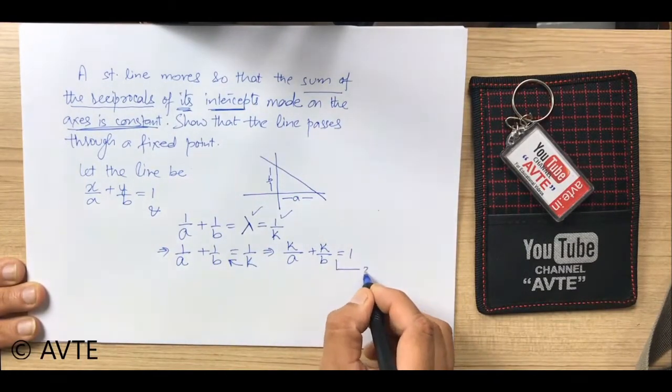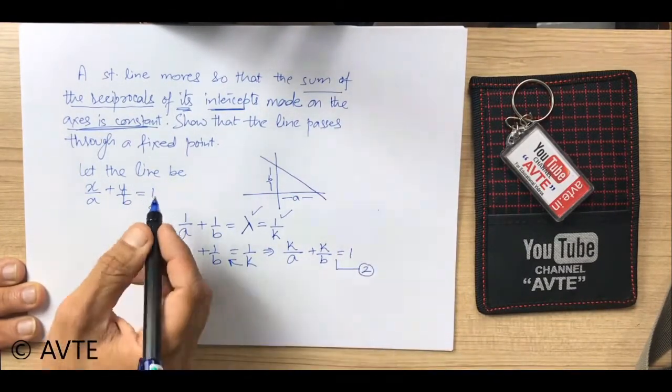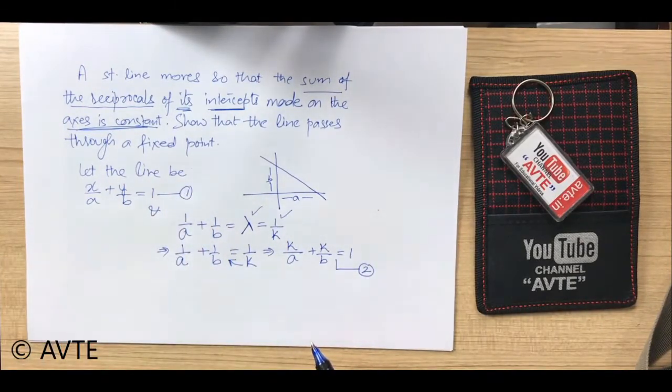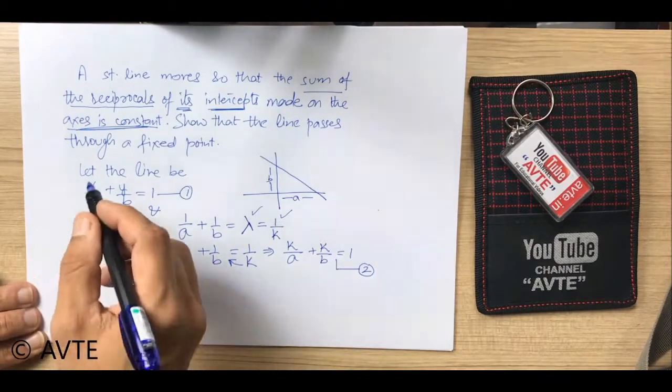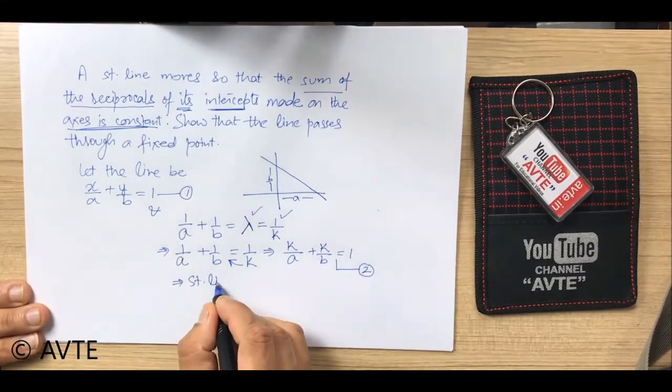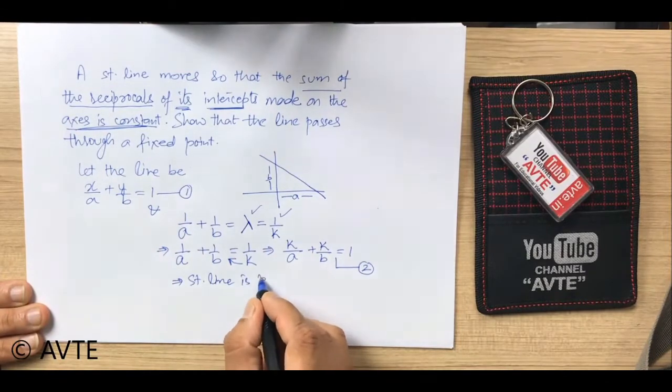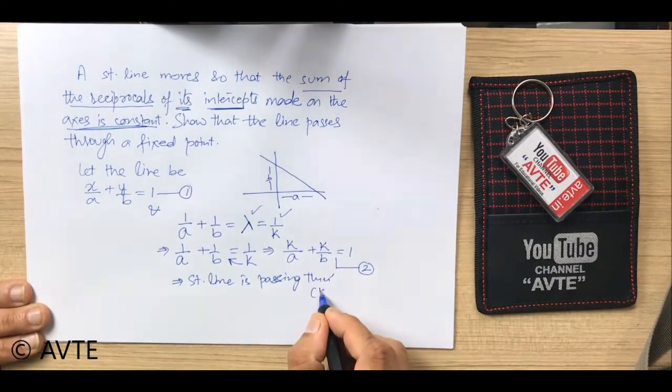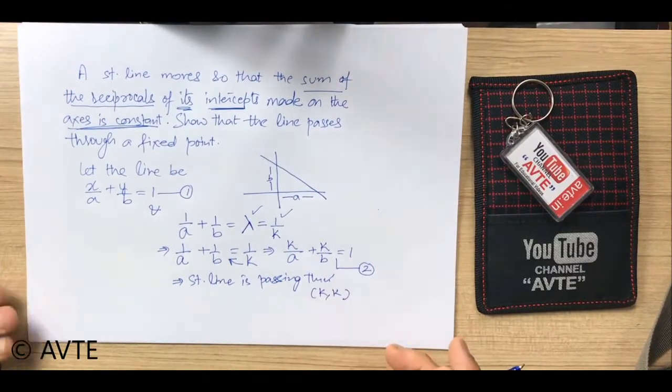So now if I call this as equation number 2 and the original equation which we took because of intercepts as 1, then by comparing you can see that the straight line is passing through k, k which is the fixed point.